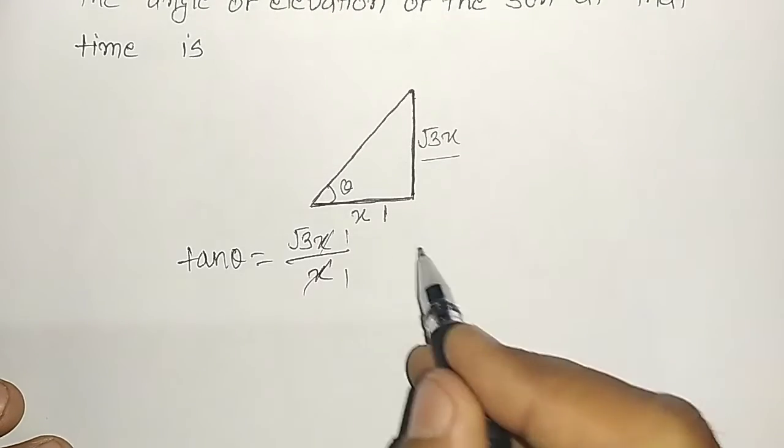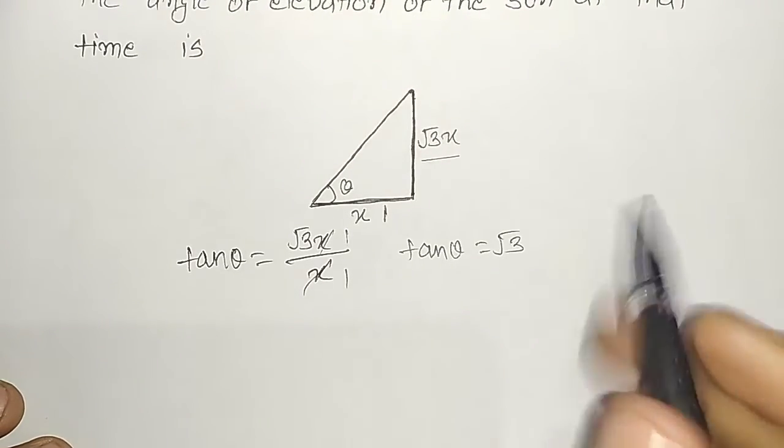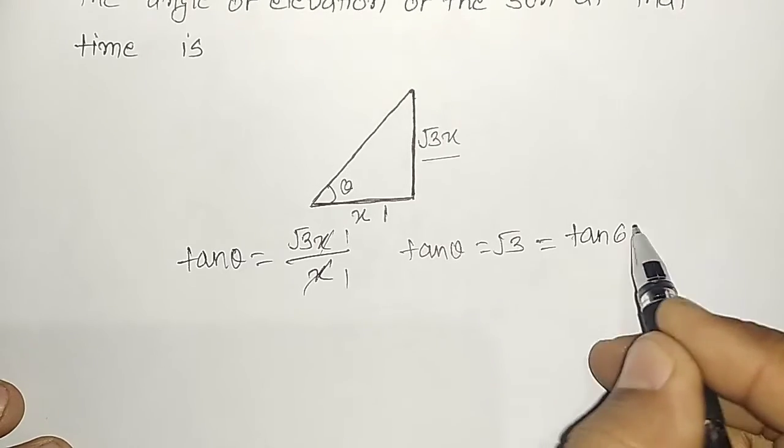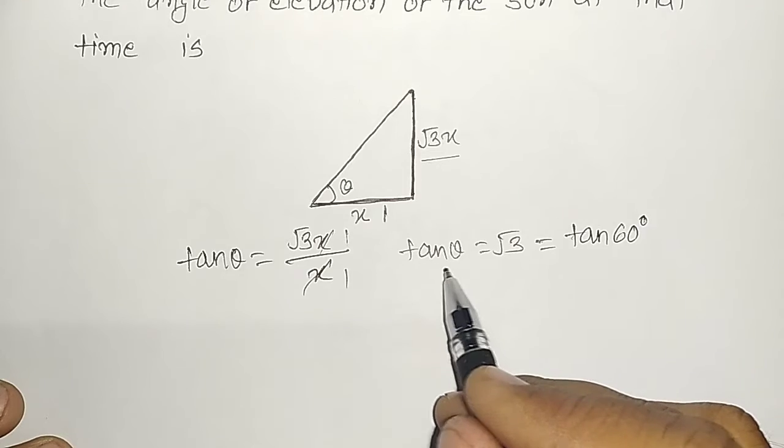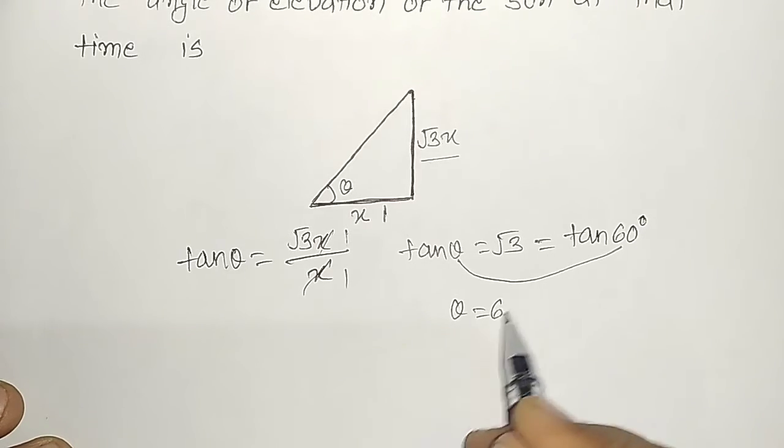Now the value of tan theta is root 3, which is equal to tan 60 degree. If we compare the angles, what we get? We get that theta equals 60 degrees. That is it guys.